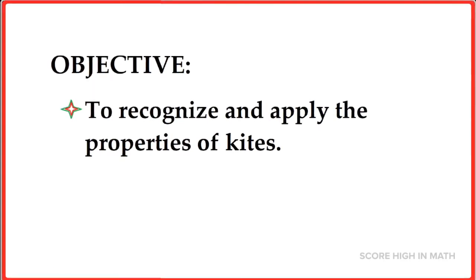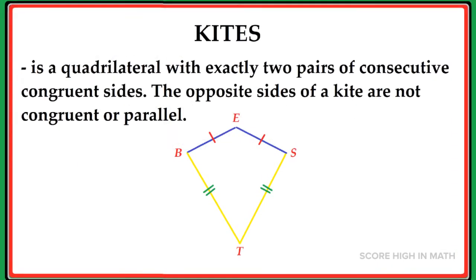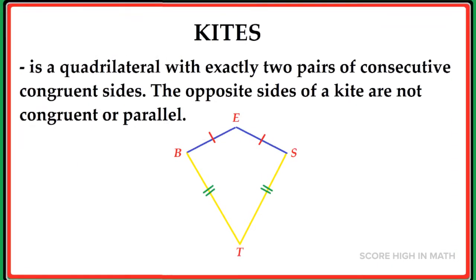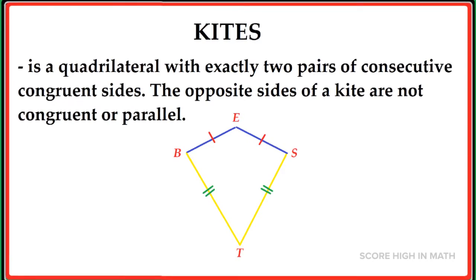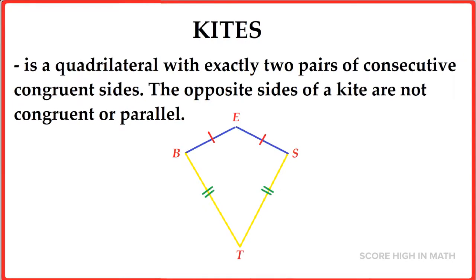Now let us move to our objective. We are going to recognize and apply the properties of kites. A kite is a quadrilateral with exactly two pairs of consecutive congruent sides. The opposite sides of the kite are not congruent or parallel.